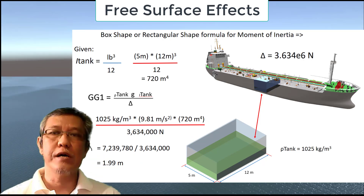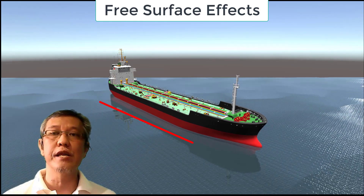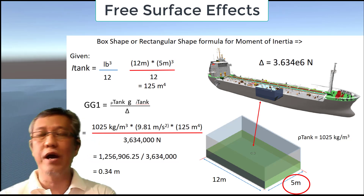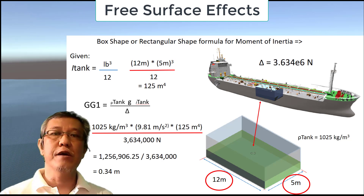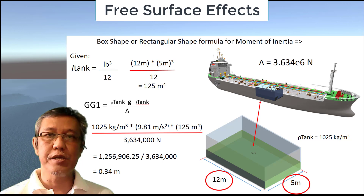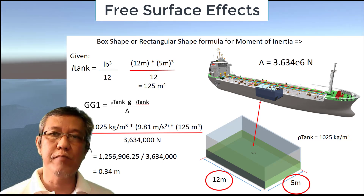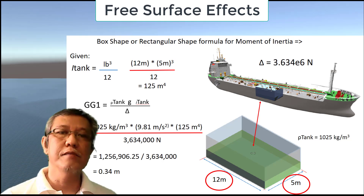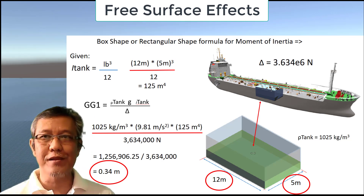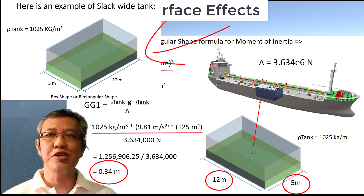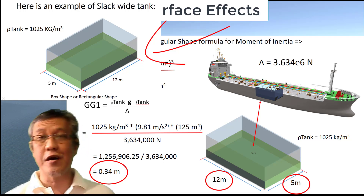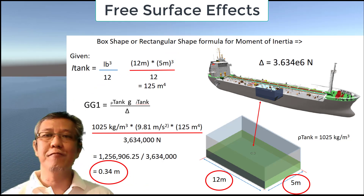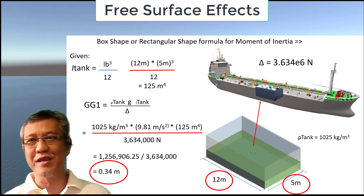Now, as you can see the shape, we tried to reposition the tank by putting it into the longitudinal length of the vessel. And as you can see again in these computations, now the breadth is about 5 meters while the length is 12 meters. With that value given, if we try to do the computations — 12 meters times 5, and 5 which is multiplied to the power of 3 and divided by 12 — is 125 meters to the fourth. So with this formula again, we have a value of 0.34 meters. So you can see the first one is transversely positioned perpendicular to the longitudinal length of the vessel, while this one is placed along the longitudinal plane of the vessel, and 1.99 versus 0.34 meters has a big difference.